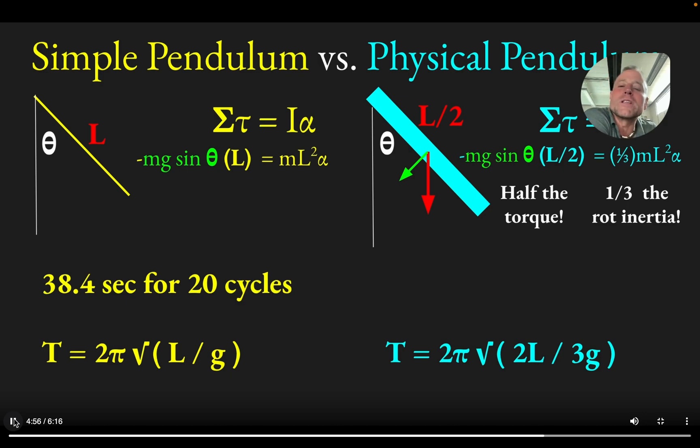It's like time 20 oscillations. So for 20 cycles with the simple pendulum, it was 38.4 seconds. With the physical pendulum, well, it shouldn't take as long and it didn't, it was only 31.4 seconds for the 20 cycles.